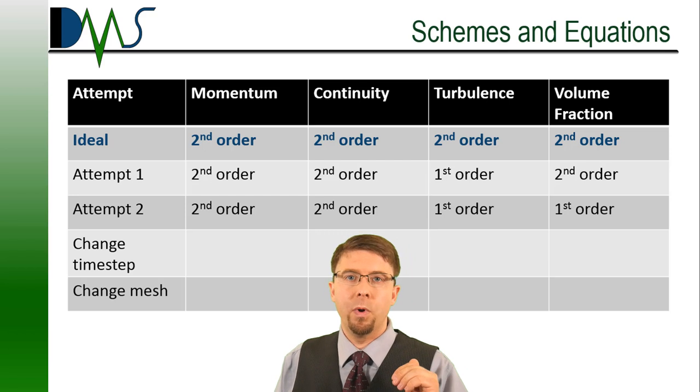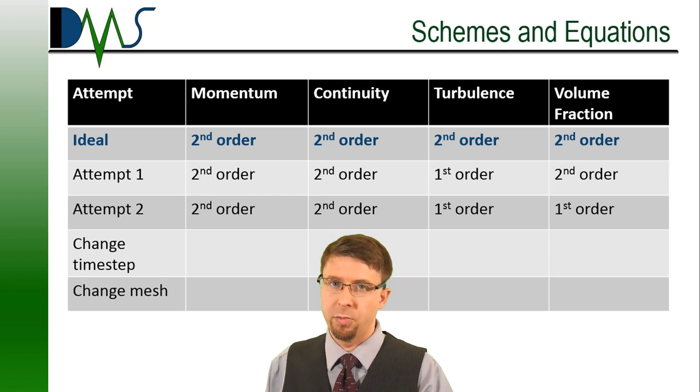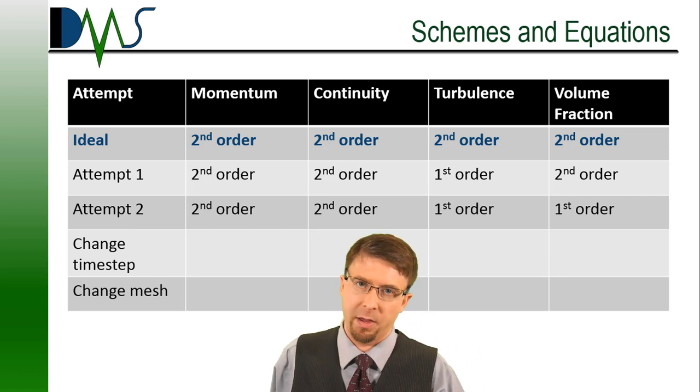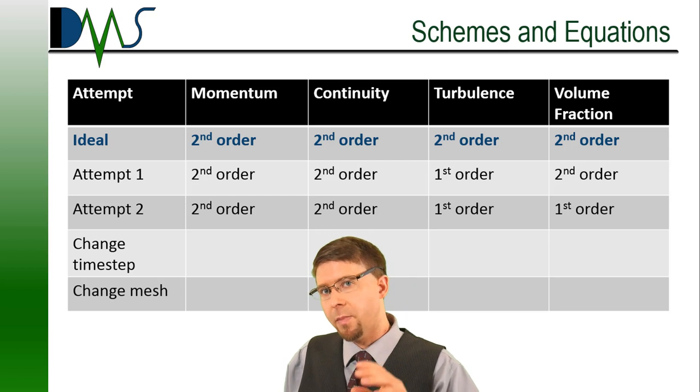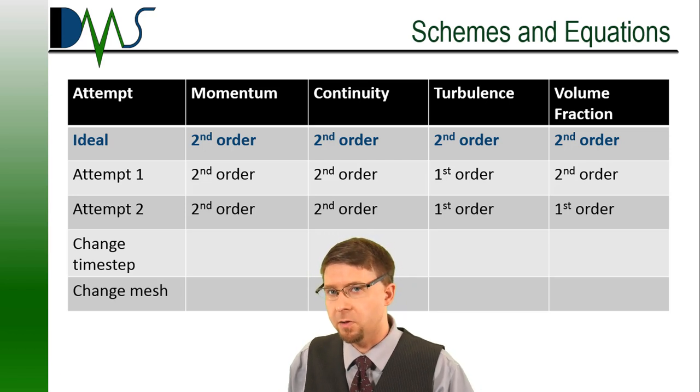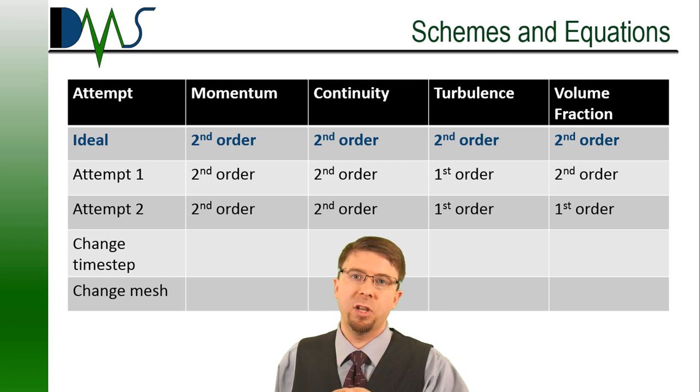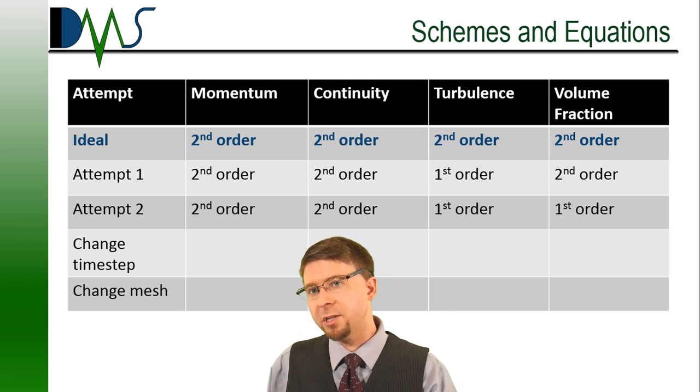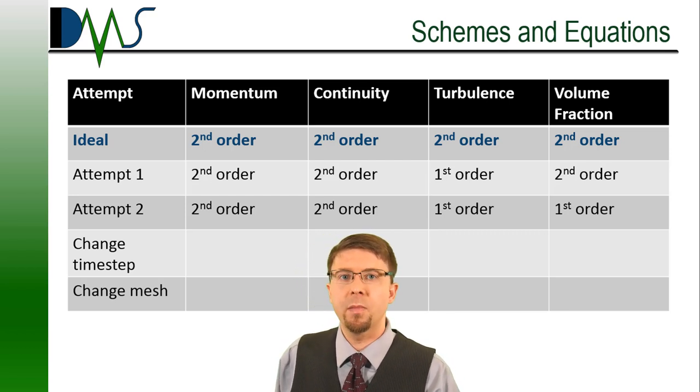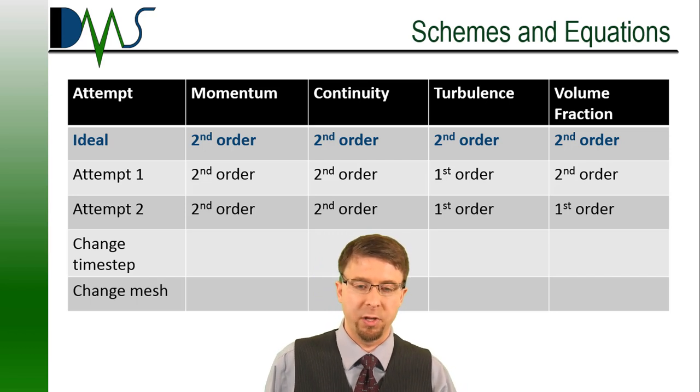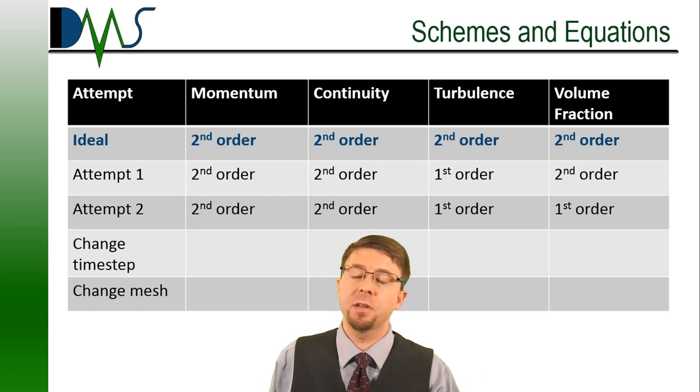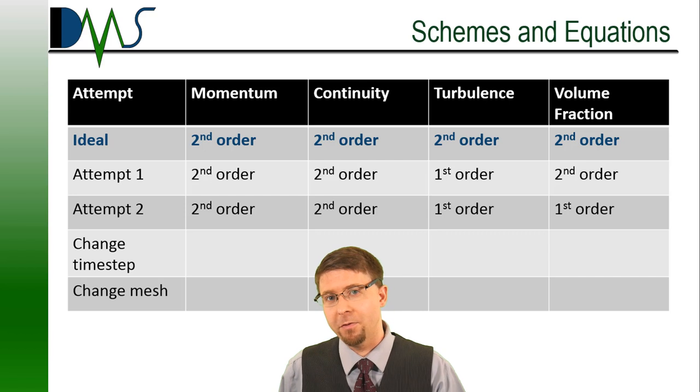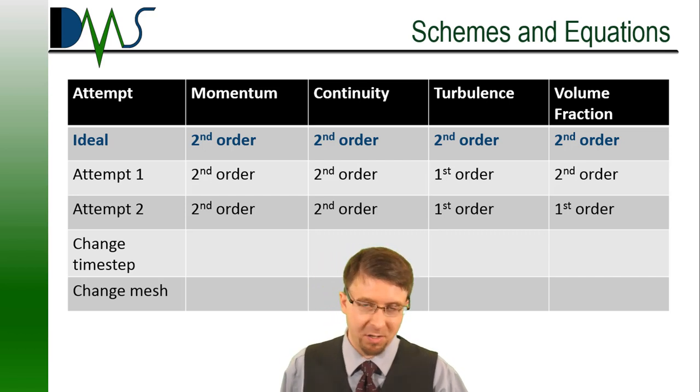And the reason for that is that I'm picking things that are not as direct of a physical impact on my simulation. You know, my momentum and my continuity equations have the most direct physical impact on my actual results. So I don't want to touch those. Those are sacred. But turbulence isn't too bad. If that still is causing me too much difficulty, my second attempt, I'm going to take my volume fraction and put that to first order interpolation. Volume fraction is something that you'll only have if you're doing a multi-phase simulation. If you're doing all of this, you're down to that, you've got first order on your turbulence, first order on your volume fraction, you still can't get it stable.